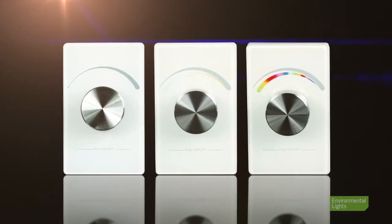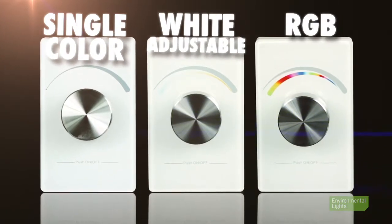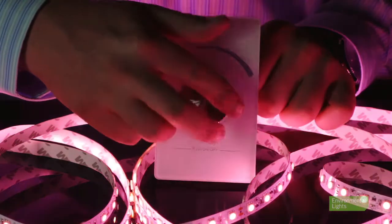The wall mount Pro rotary knobs provide full control of single color, wide adjustable, or RGB LEDs with a single push button knob. Push to turn the lights on or off and turn the knob to brighten or dim the lights.